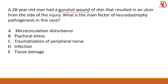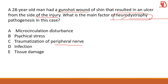A 28-year-old man with a gunshot wound of the shin developed an ulcer from the site of injury. What is the main factor of neurodystrophy? Every part of the body contains nerve fibers, so the bullet may have damaged a nerve. This phenomenon is called traumatization of the peripheral nerve — neurodystrophy involves degeneration or destruction of neurons and nerve fibers. We are looking for traumatization of the peripheral nerve.